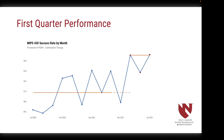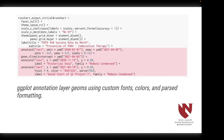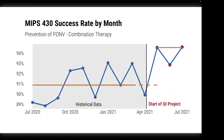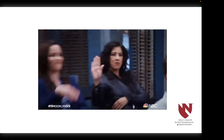That looks pretty good! The run charter package has identified a run, meaning we have three consecutive events above the previous baseline. Run charter has rebased a new median for us, and everything has been represented using our updated theming through ggplot. Before bringing this back to our quality group, I thought I'd add a little more detail by adding ggplot annotation layer geoms, custom fonts, colors, and parsed formatting. This is the final plot we presented back to our department as an interval update on our QI project. We were feeling pretty good about that!